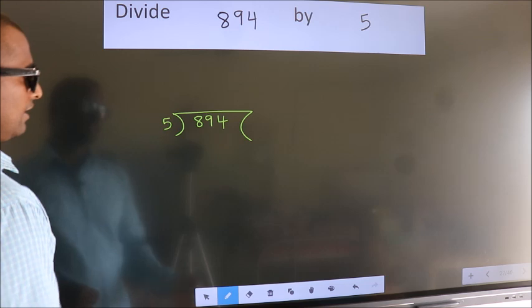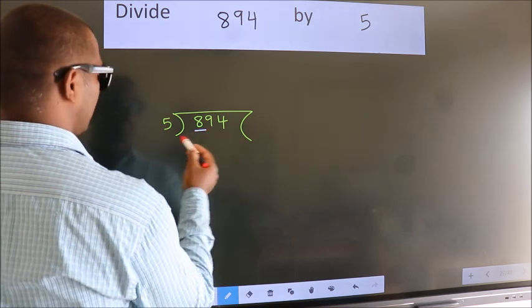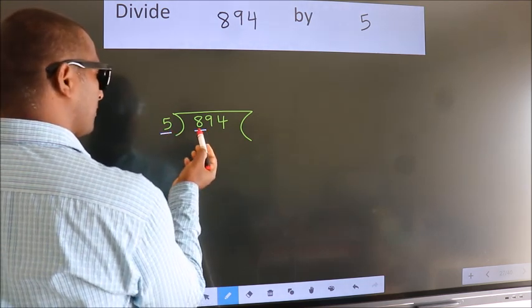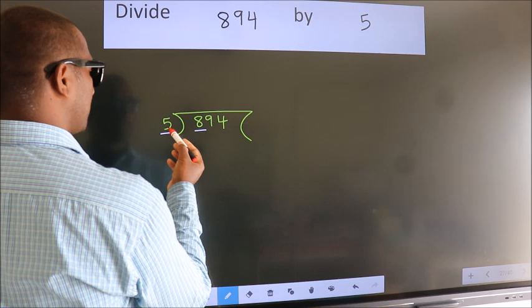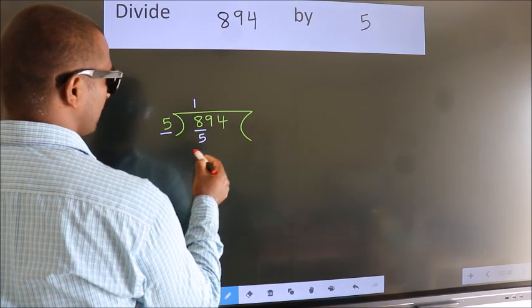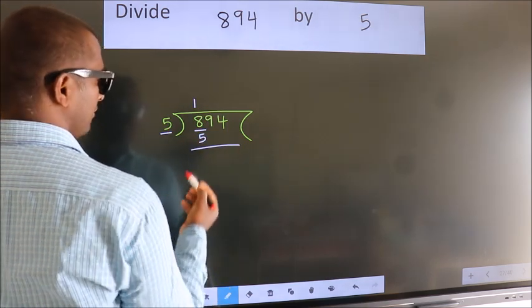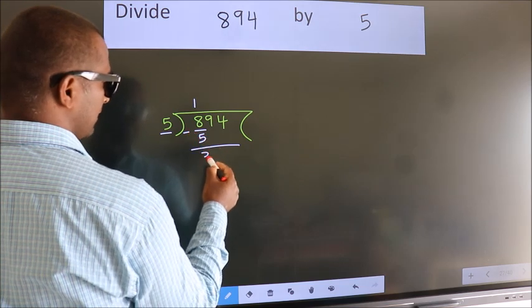Next, here we have 8, here 5. A number close to 8 in 5 table is 5 once 5. Now, we should subtract. We get 3.